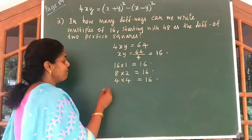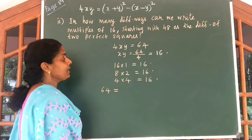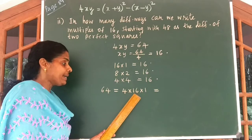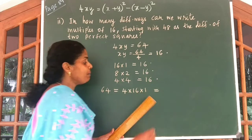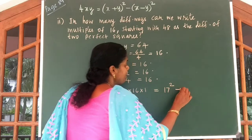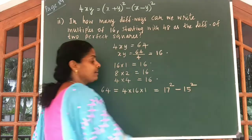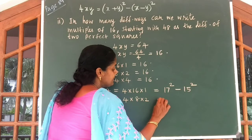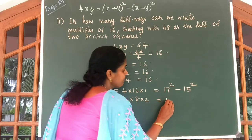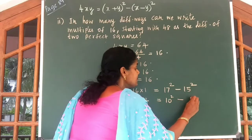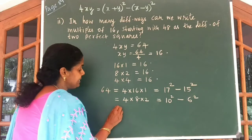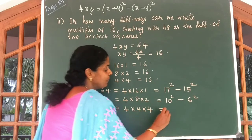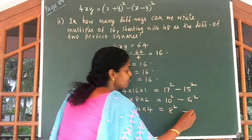Let us write 64 in three ways. First: 64 is equal to 4 into 16 into 1, giving 16 plus 1: 17 square minus 15 square. Second: 4 into 8 into 2, that is 8 plus 2: 10 square minus 6 square. Third: 4 into 4 into 4, that is 4 plus 4: 8 square minus 0 square.